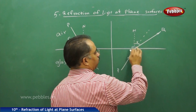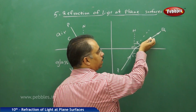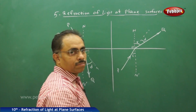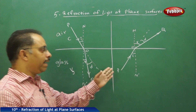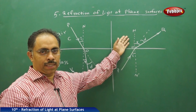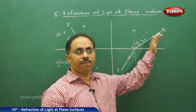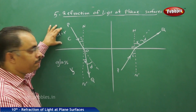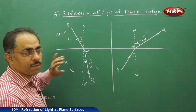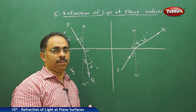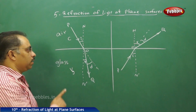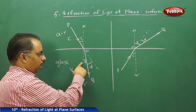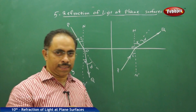If the ray were going straight, it would go along its original path, but it is getting deviated. This angle here is the angle of deviation. Whenever a light ray travels from a denser medium to a rarer medium, it bends away from the normal, and whenever it travels from a rarer medium to a denser medium, it bends towards the normal — these are the two laws of refraction. Additionally, the incident ray, the refracted ray, and the normal at the point of incidence all lie in the same plane.